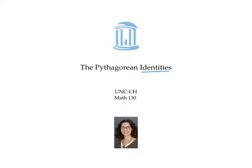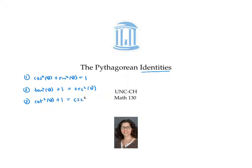Recall that an identity is an equation that holds for all values of the variable. This video states and proves three identities called the Pythagorean identities. The first one is the familiar cosine squared theta plus sine squared theta equals one. The second one says tan squared theta plus one equals secant squared theta. And the third one goes cotangent squared theta plus one equals cosecant squared theta.